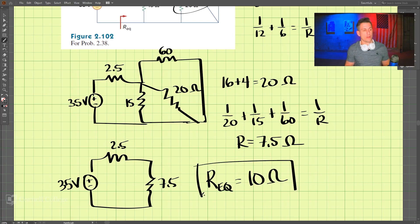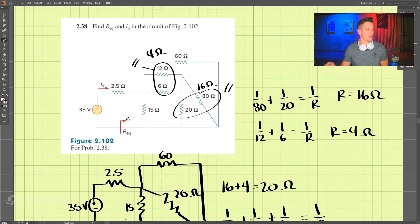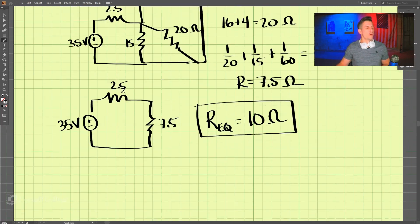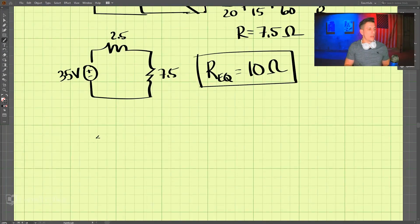So that is one of the answers to this problem. Let's go back up and take a look. So we have found our Req, and now we want to find I0, this current coming here. So redrawing the circuit, we have plus, minus, and 10 ohms, and 35 volts. So this is our equivalent circuit. So to figure out I0, that's the current here.